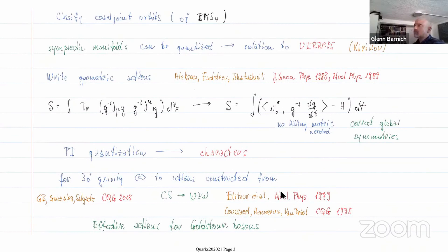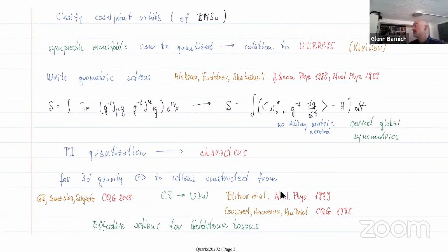Let me start almost with the conclusions. One kind of thing you might want to do with the co-adjoint representation is to classify the co-adjoint orbits, because the co-adjoint orbits are symplectic manifolds and they can be quantized. Then there is a direct or indirect relation to unitary reducible representations of the group, as in the program set up by Kirillov and Kostant. One particular instance of this quantization was done in the late 80s by Alekseev, Faddeev, and Shatashvili.